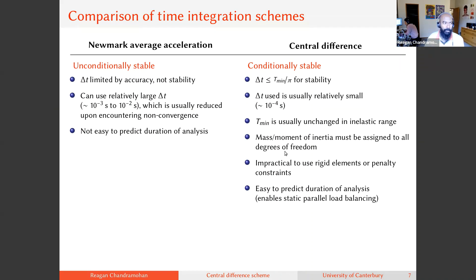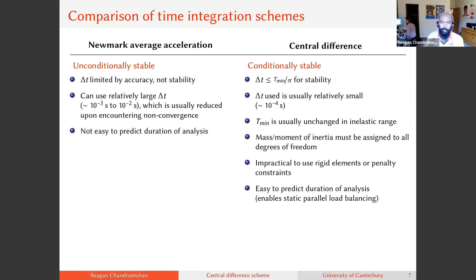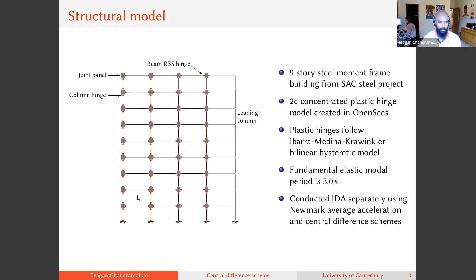The benefit of these two model requirements is that you can run your model using the central difference scheme and avoid numerical non-convergence entirely. Also, since you won't encounter non-convergence, the time to run one analysis is directly proportional to the duration of the ground motion — a 20-second ground motion takes exactly twice as long as a 10-second one. This predictability provides benefits for task scheduling when running a large number of ground motions.